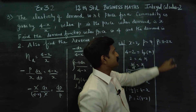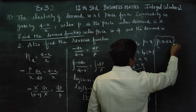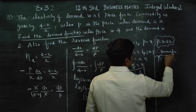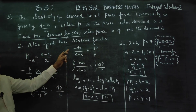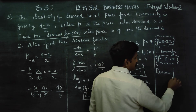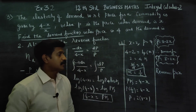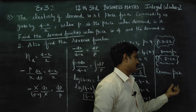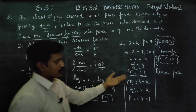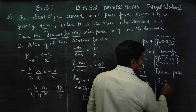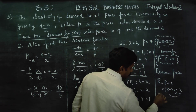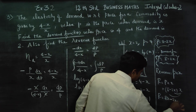Therefore, p equals 8 minus 2x is called the demand function. The demand function is p equal to 8 minus 2x — that is your first answer. Now find the revenue function. Revenue is equal to price into number of goods sold, that is p into x. The revenue formula is R equals p into x, where p equals (8 minus 2x).